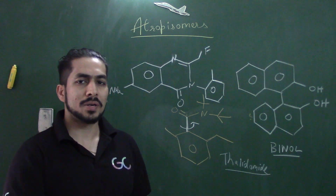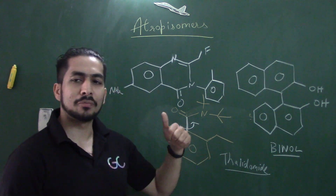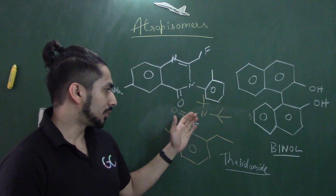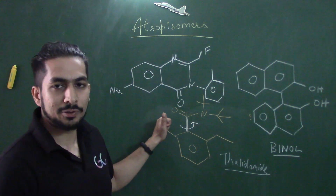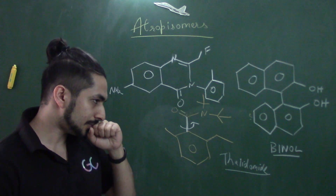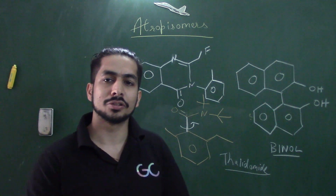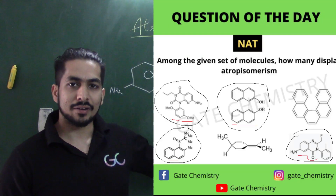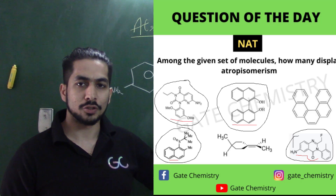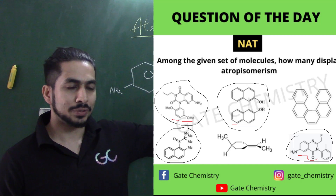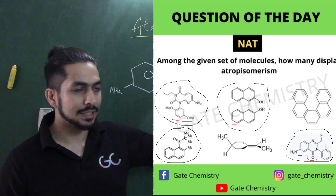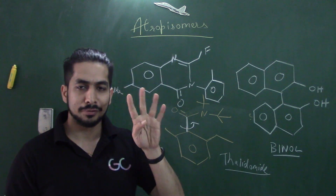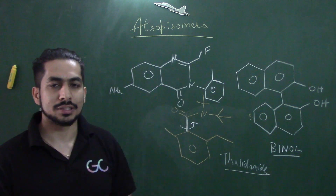That is also one of the reasons atropisomerism has been introduced in the GATE examination. Though atropisomerism has been asked previously in the form of biphenyl systems, you have to remember that atropisomers exist in such systems too, and the key condition is that the plane of symmetry must be absent. Out of the six molecules shown, four will show atropisomerism. The remaining two show helical chirality. So the correct answer to the numerical question is four.